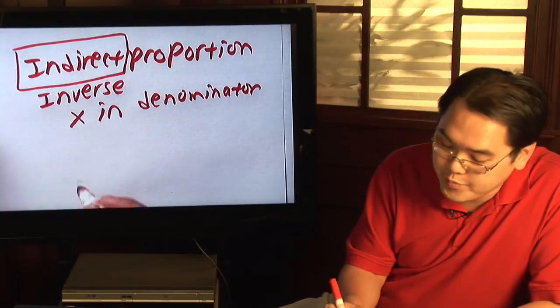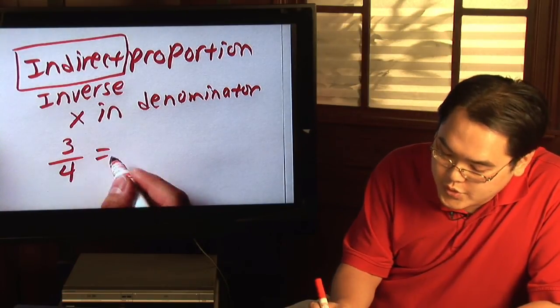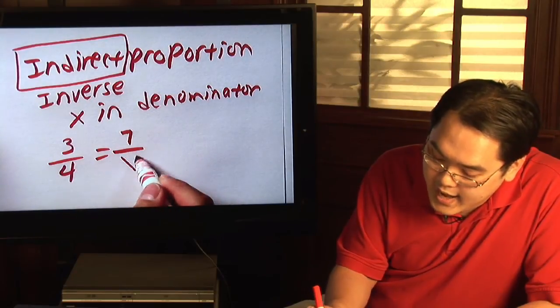So here's a quick example for you. Suppose you have three over four equals to seven over x.